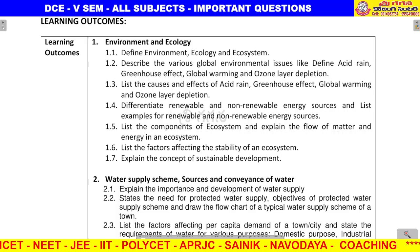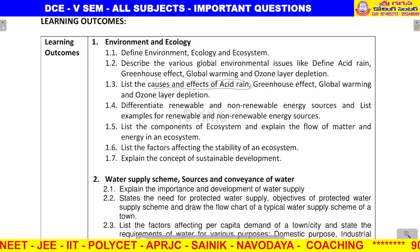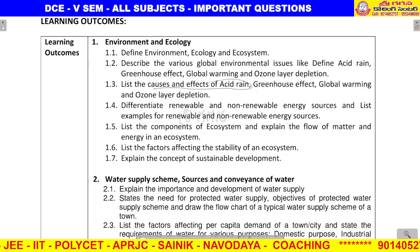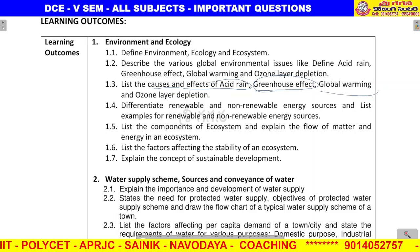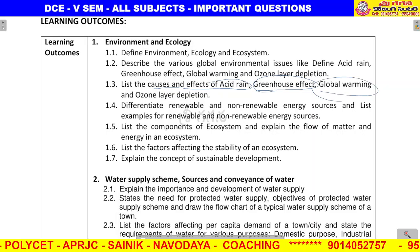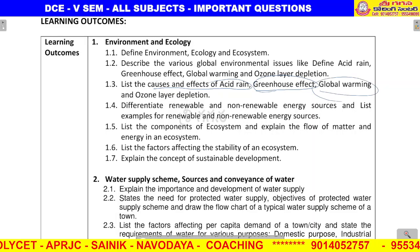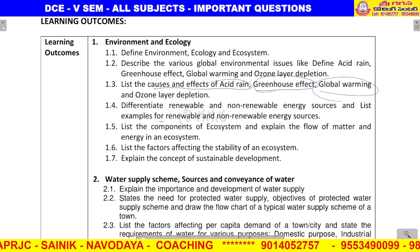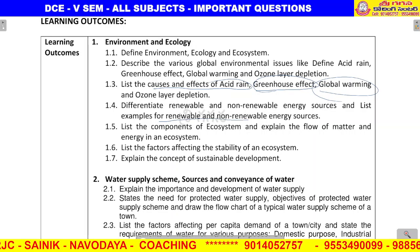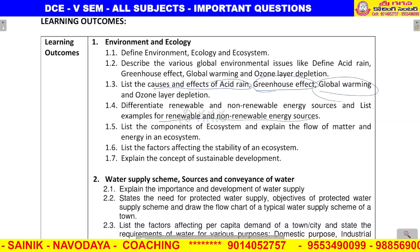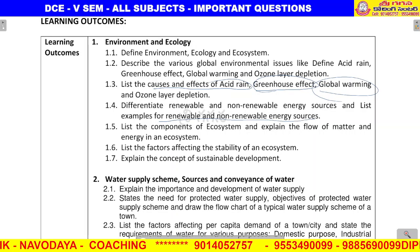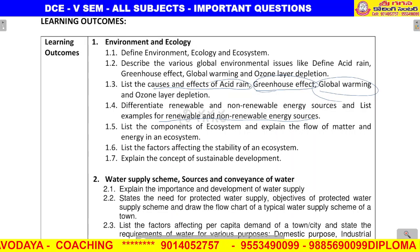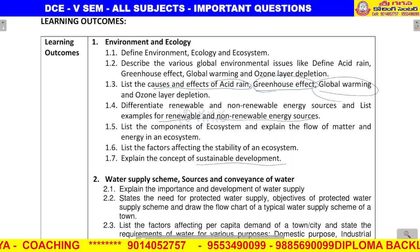We have a list of causes and effects of acid rain. Next, what is meant by the greenhouse effect? What is meant by global warming? Next, what are renewable and non-renewable energy sources? Give examples.